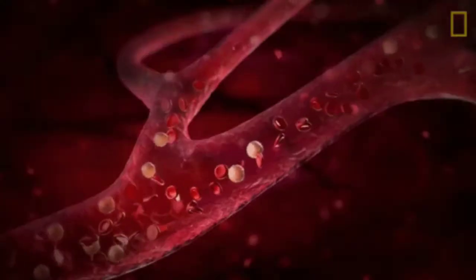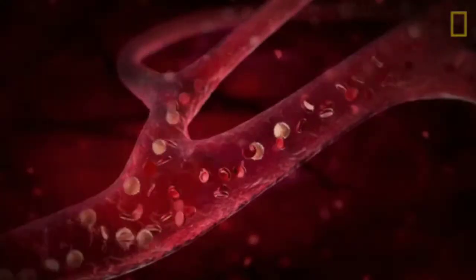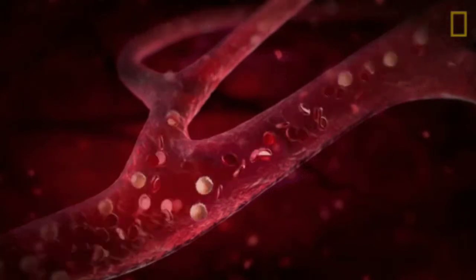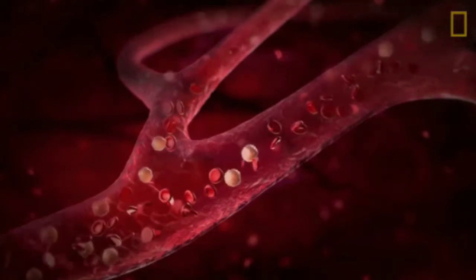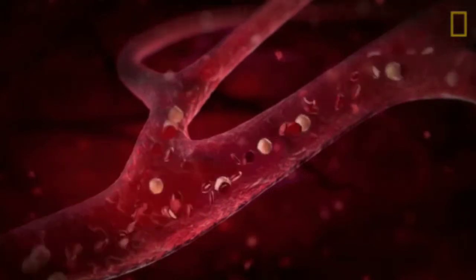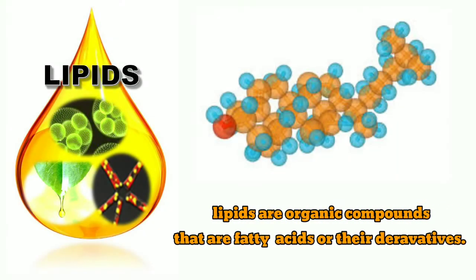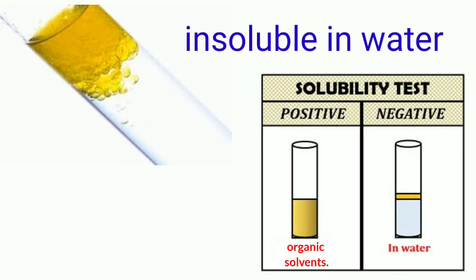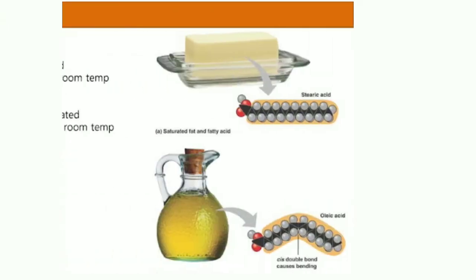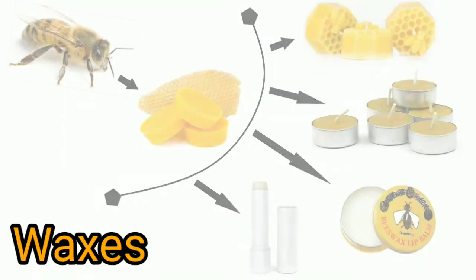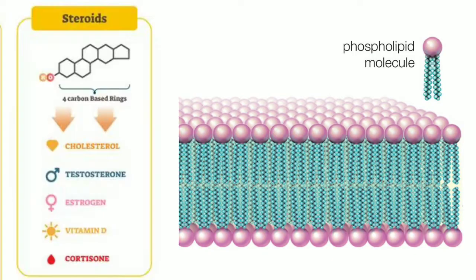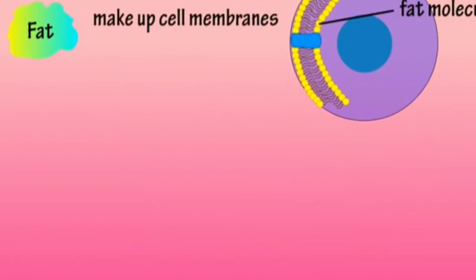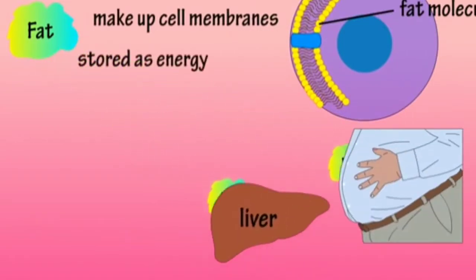Cholesterol is a waxy type of fat or lipid which moves throughout your body in your blood. Lipids are organic compounds that are fatty acids or their derivatives — insoluble in water but soluble in an organic solvent. Examples include fats, oils, waxes, phospholipids, and steroids. Fats are stored in the form of energy and are also known as triglycerides.